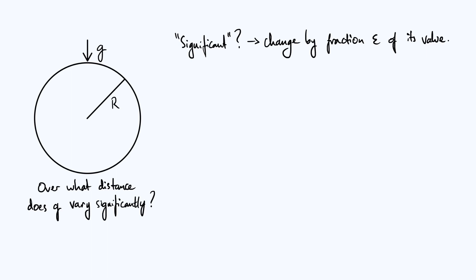For example, we might say that we're okay for g to vary within let's say a percent or even five percent or ten percent of its value before we start having to take into account the variation of g with space.